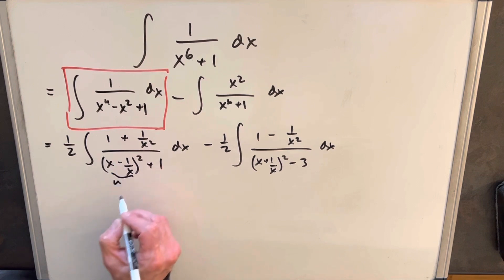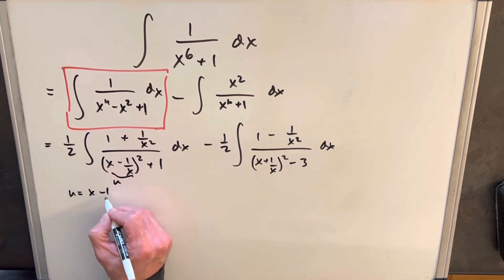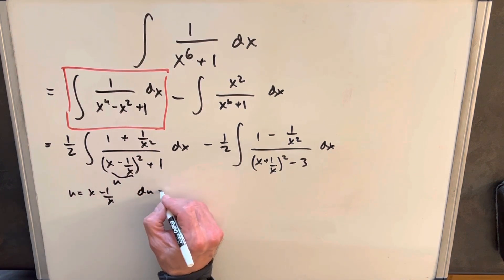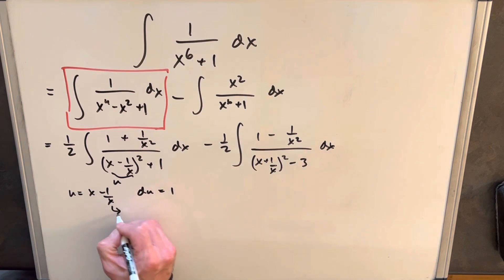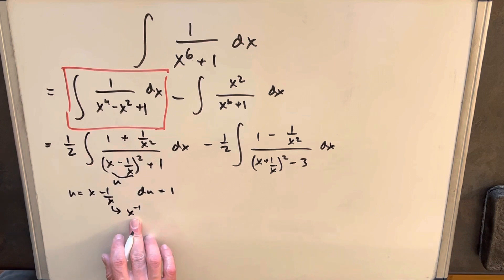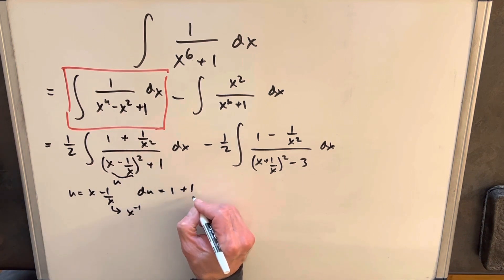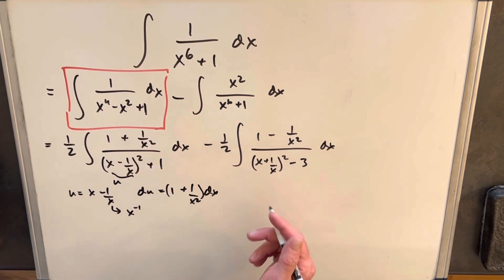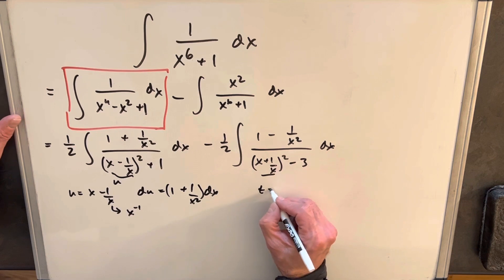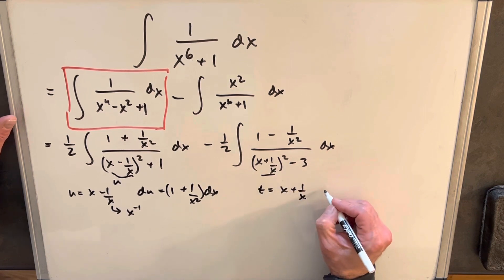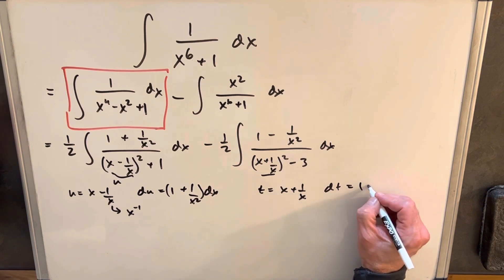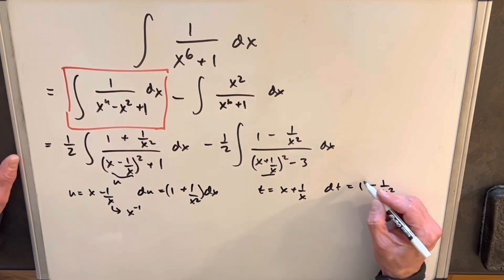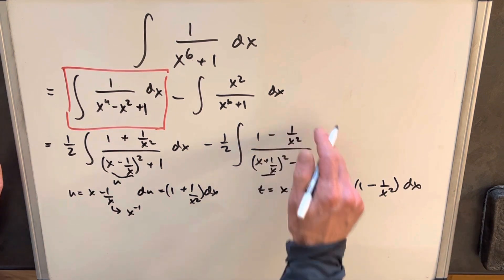For the first integral, let u equal x minus 1/x. Differentiating, du equals 1 plus 1 over x squared dx — thinking of the 1/x term as x to the negative 1 — and that's exactly what we have in the numerator. For the second integral, let t equal x plus 1/x, so dt equals 1 minus 1 over x squared dx, because we have the minus from the power but a plus sign there. That's exactly what we have in that numerator.